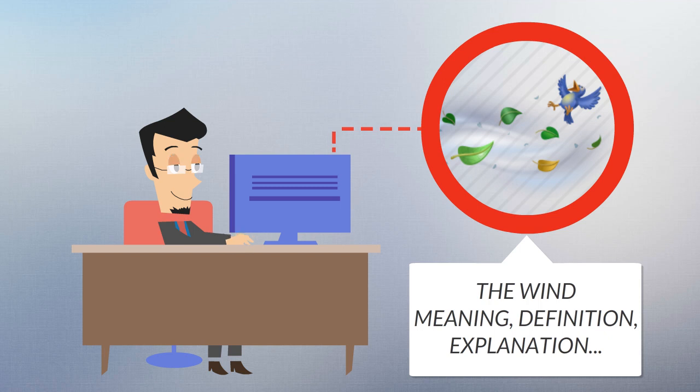In coastal areas, the sea breeze land breeze cycle can define local winds. In areas that have variable terrain, mountain and valley breezes can dominate local winds.